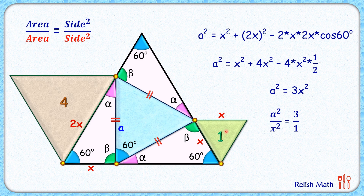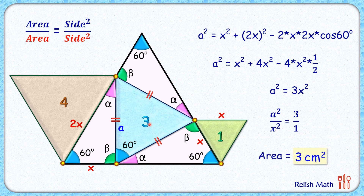So a²/x² = 3:1. Since a is the side length of the blue equilateral triangle and x is the side length of the green equilateral triangle, the side-square ratio equals the area ratio. Therefore, the area of the blue equilateral triangle to the area of the green equilateral triangle is 3:1. Since the green area is 1, the area of the blue equilateral triangle is 3 centimeters square. I hope you enjoyed the solution — see you in the next video!